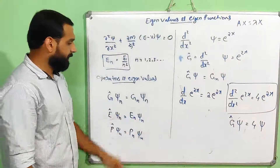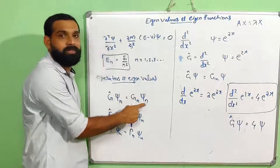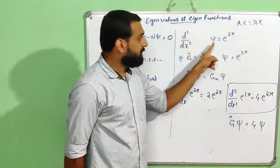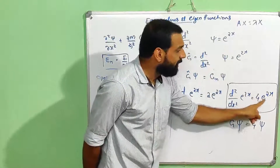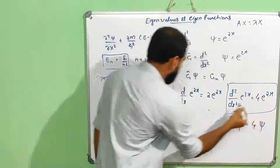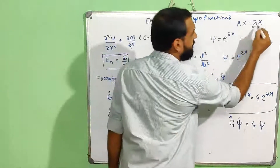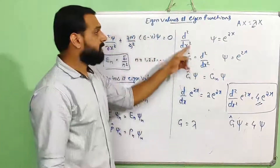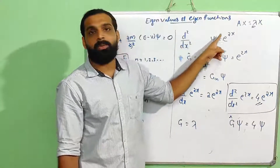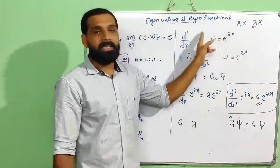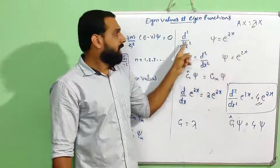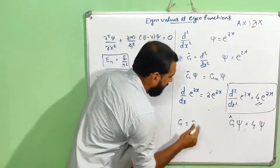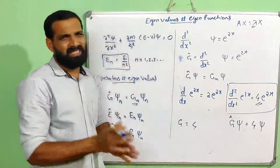So d²/dx²(e^(2x)) = 4·e^(2x). This matches the form: operator × wave function = value × wave function, i.e., Ĝψₙ = gₙψₙ. The eigenfunction is ψ = e^(2x) and the eigenvalue is λ = 4.